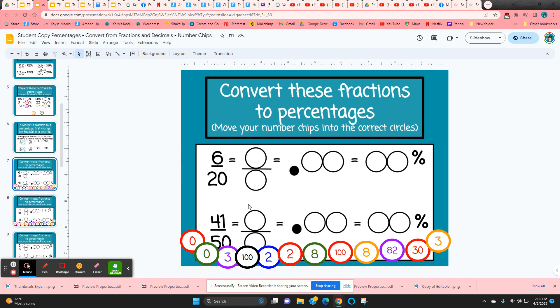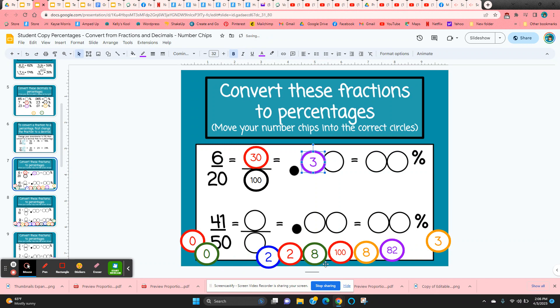So the next slide, students are just going to be moving the number chips. So they want to change that fraction to an equivalent fraction with 100 in the denominator. So we'd have to multiply times five. 20 times five is 100. Six times five would be 30. That would give us 30 hundredths. And then as a decimal, 30 hundredths. And as a percent, 30%.